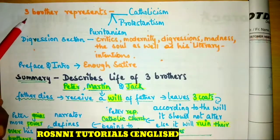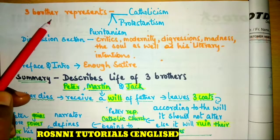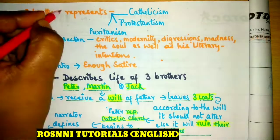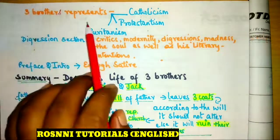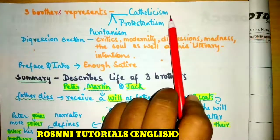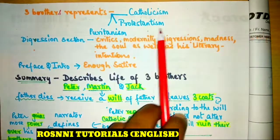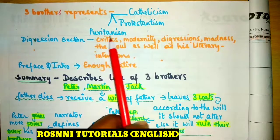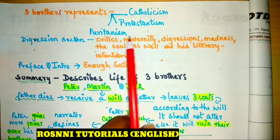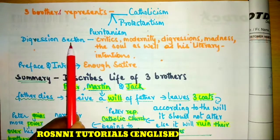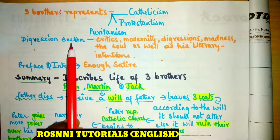In the story we find three brothers, and they represent Catholicism, Protestantism, and Puritanism. There are also digressions in the story which talk about critics, modernity, and digressions themselves — keeping oneself aloof and observing the situation, the madness of the soul, as well as the narrator's literary intentions.